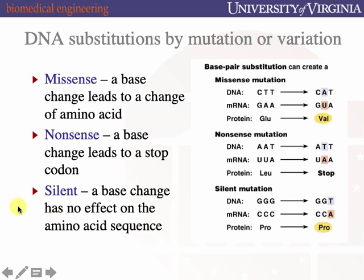There are other single-base substitutions that can be more dramatic. A nonsense substitution changes a codon not to another amino acid, but to a stop codon. For example, leucine — with just the wrong one substitution in the middle — gets converted to a stop codon. Now a release factor comes in instead of the leucine-charged tRNA, and a protein that was supposed to be a certain length is now truncated.